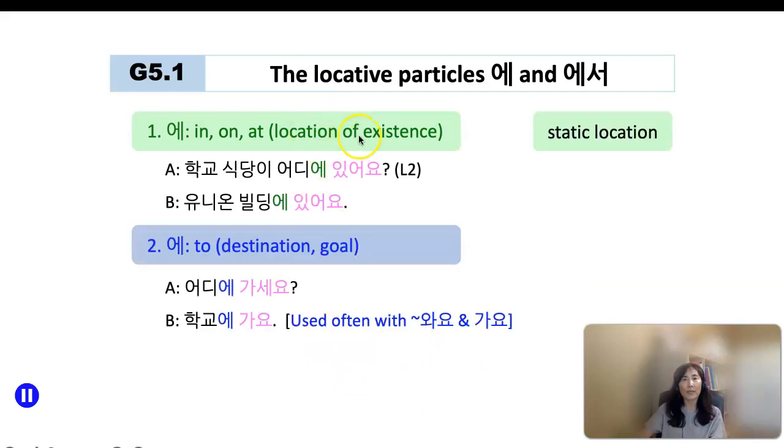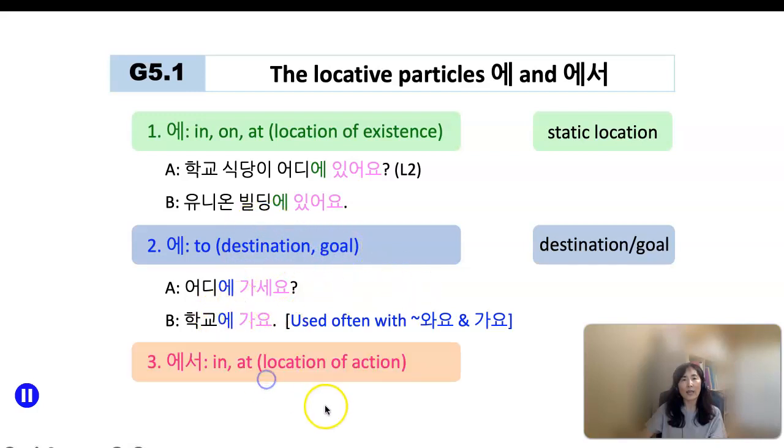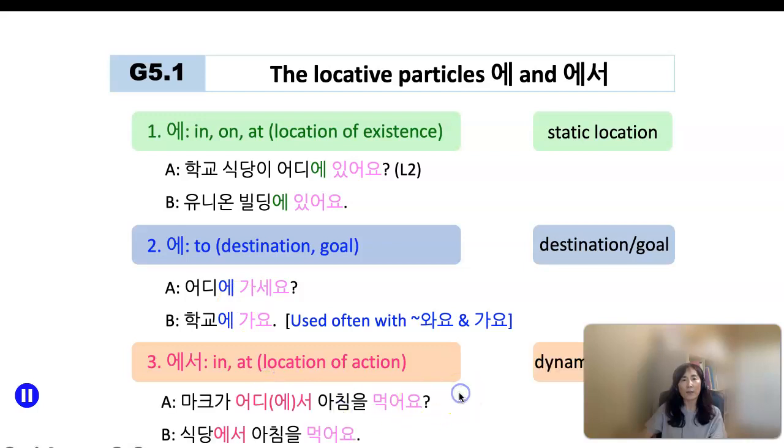So in summary, if it is a location of existence, a static location, then you add 에. Destination or goal with a directional verb, you add 에. But for a dynamic verb, then you add 에서.